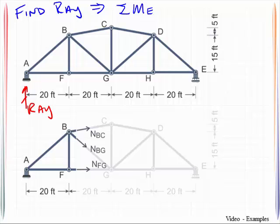I will then make a cut through BC, BG, and FG, and then sketch the free body diagram looking at the left section.